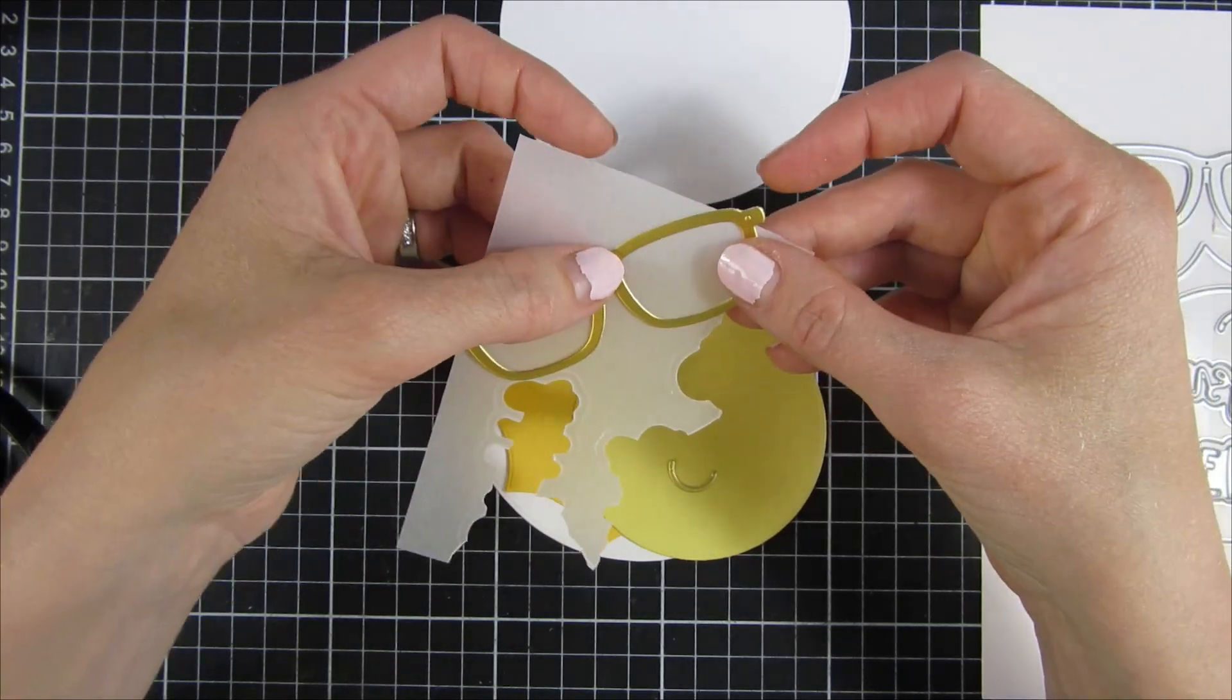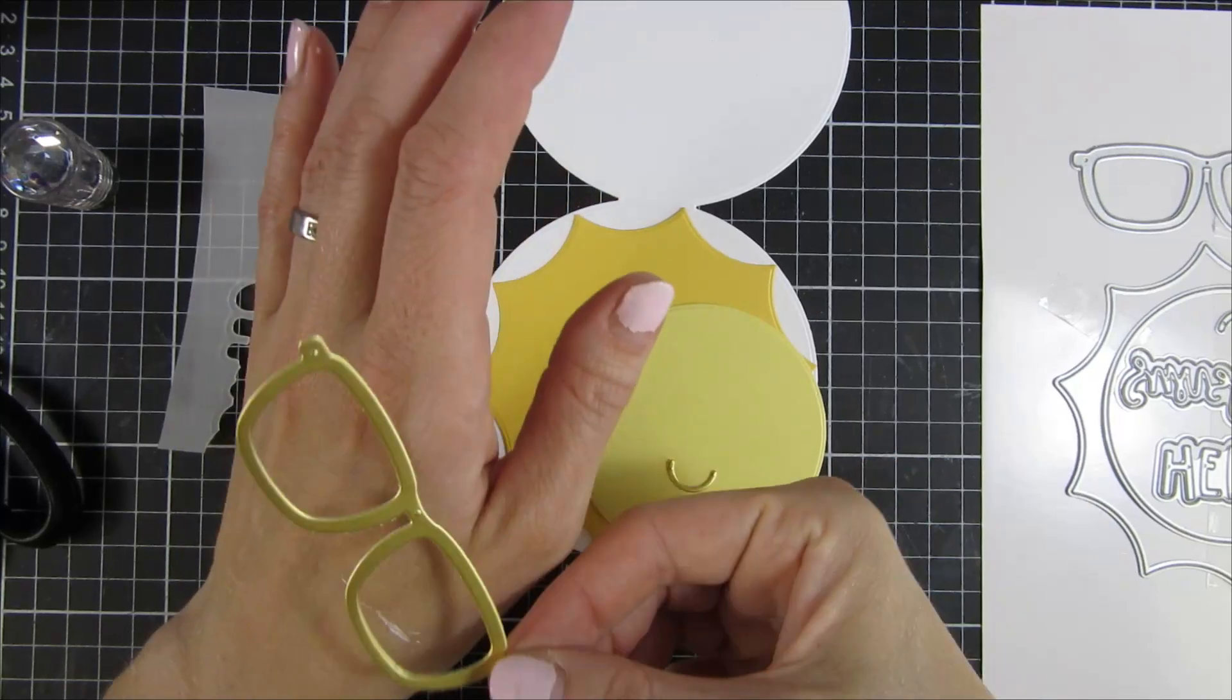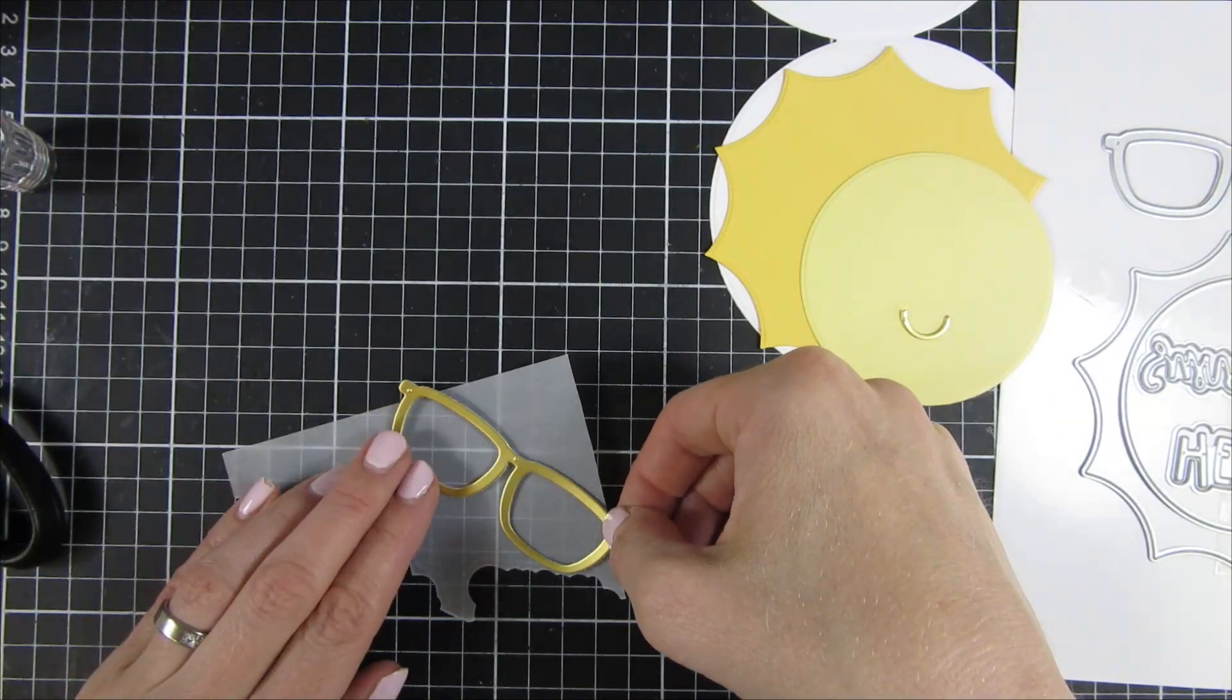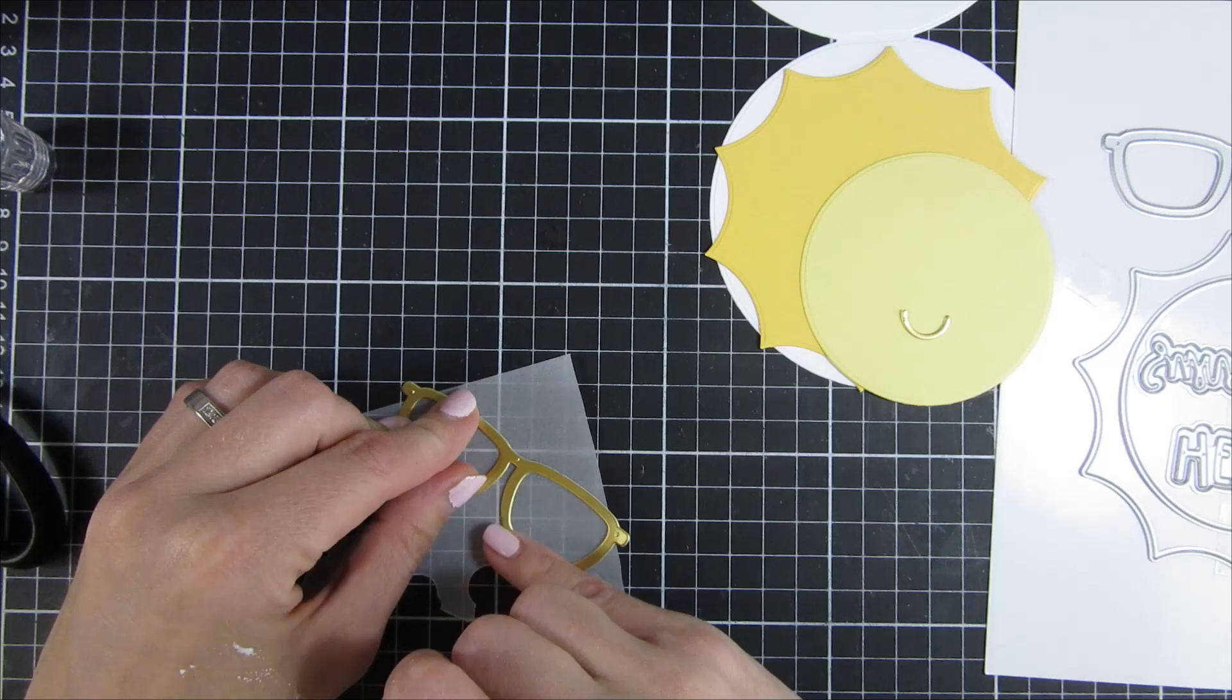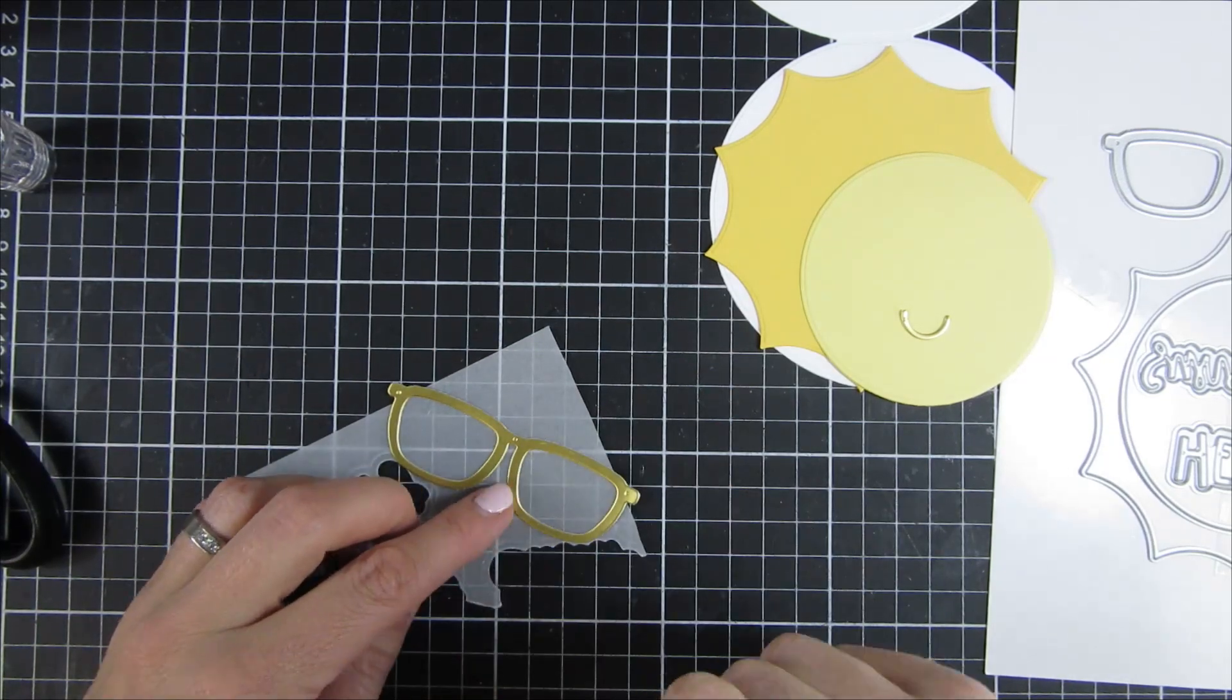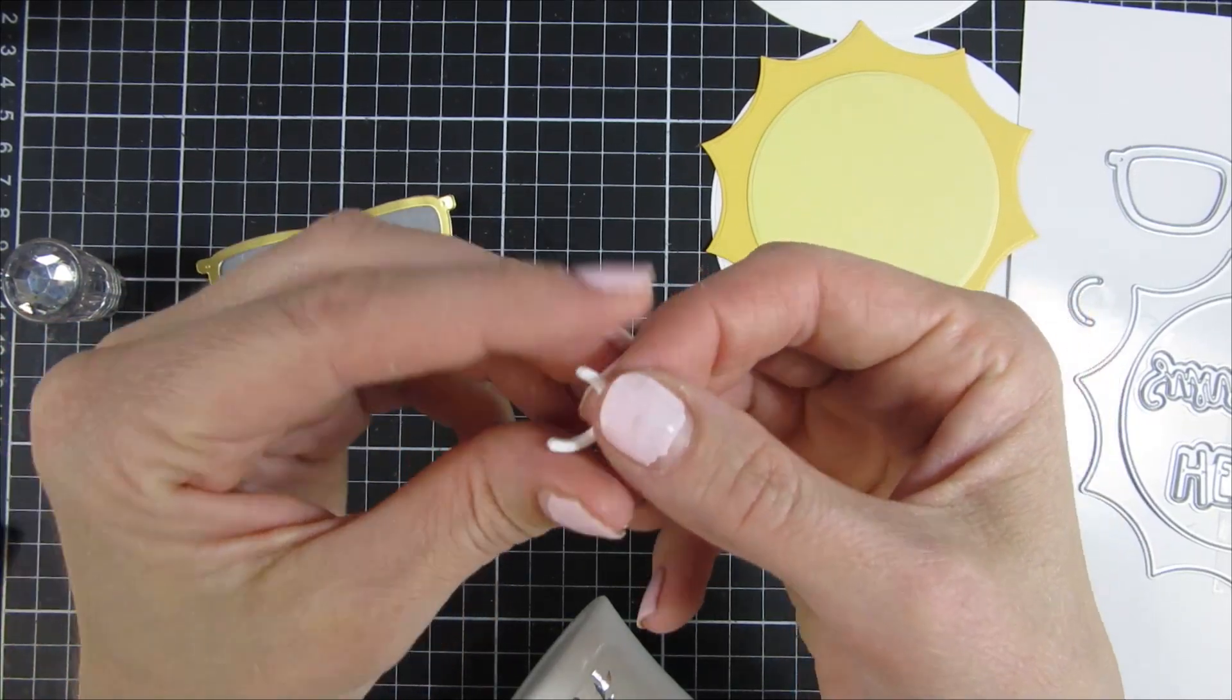You can see I cut my card base out with the help of that die, and then I combined it with a new die set called Sunshine Die Set. It's the one on screen here. I just love this die set. I think it's so much fun and it really is a bright card that you can create with it.